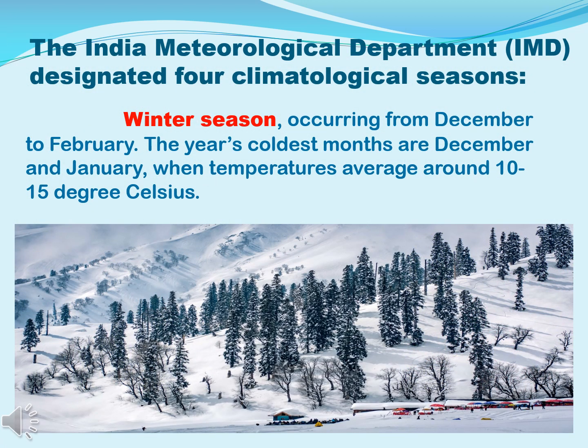The India Meteorological Department or IMD designates four climatological seasons. Winter season: winter in India falls between December to February. The temperature during winter ranges from 10 to 15 degrees Celsius in the northern regions of the country. Snowfall also happens along with rain. The coldest months in India are December and January. The nights are longer than the days during winter. Winter is enjoyed by people because of the cool and chilly weather; in hilly areas they also have snowfall, which allows them to enjoy sports like snowboarding, ice skating, and many more.